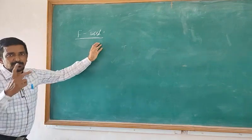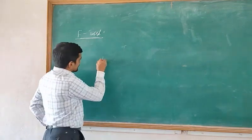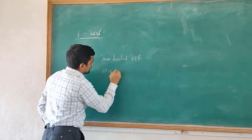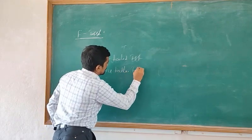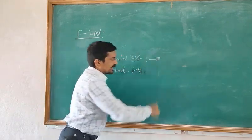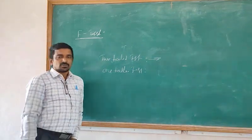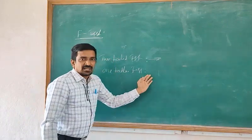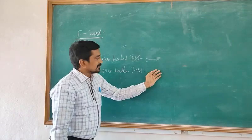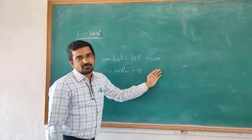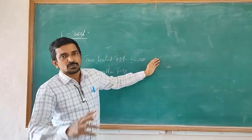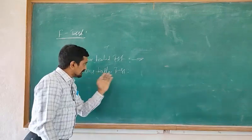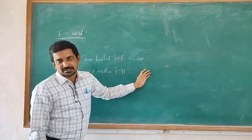The F-test can be of two types: one is the two-tailed test and the second is the one-tailed test. In the two-tailed test, the alternate hypothesis is that the two variances are not equal. In the one-tailed test, we verify only one direction.